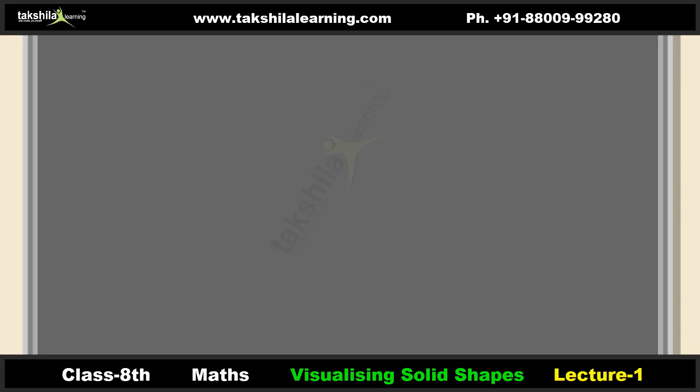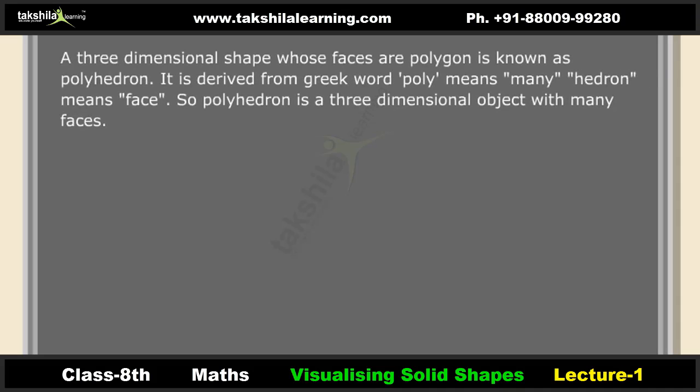Edges are the line segments along which two faces intersect. Vertices are the points at which three or more faces meet. A polyhedron is a three-dimensional shape whose faces are polygons. It is derived from the Greek word: poly means many, and hedron means face — so a polyhedron is a three-dimensional object with many faces.